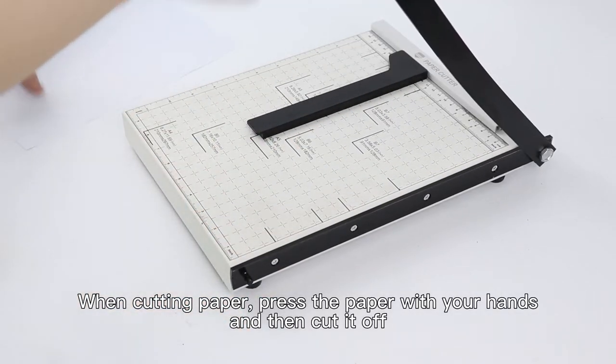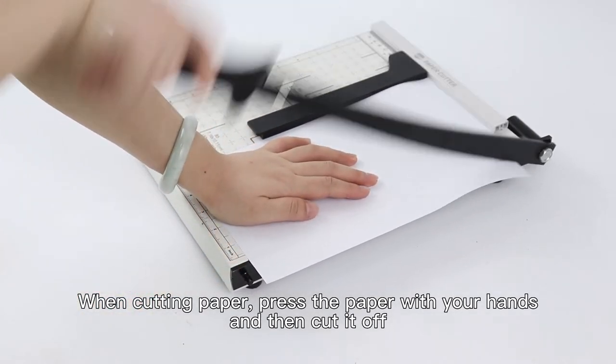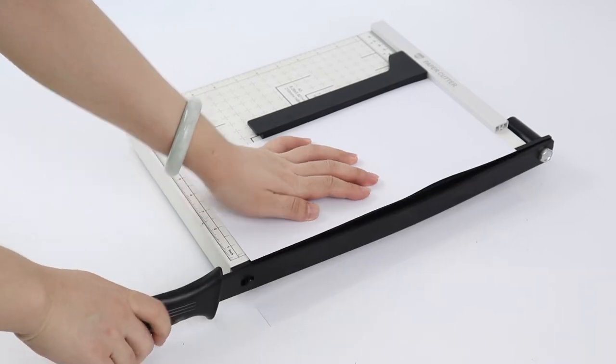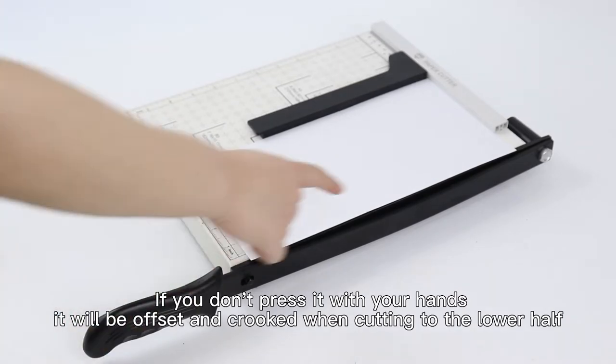When cutting paper, press the paper with your hand and then cut it off. If you don't press it with your hand, it will be offset and crooked when cutting to the lower half.